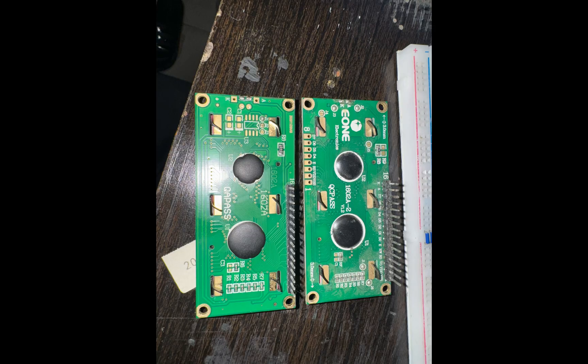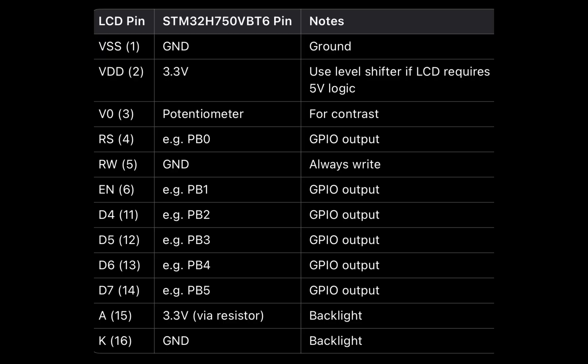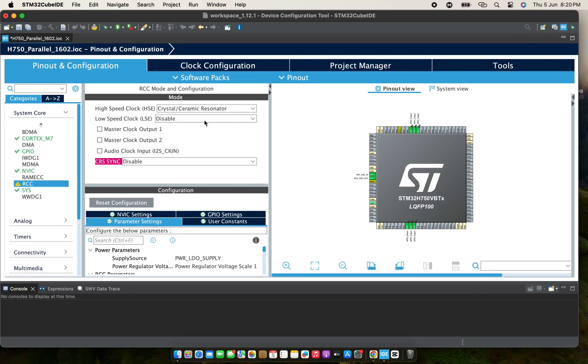I chose the right LCD for parallel configuration. These are the pins I connected: V0 to ground, VA with a 3-ohm resistor as I don't have a potentiometer, and I connected A to 5V.